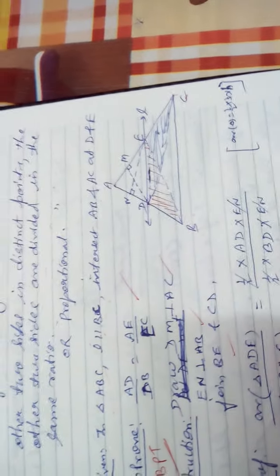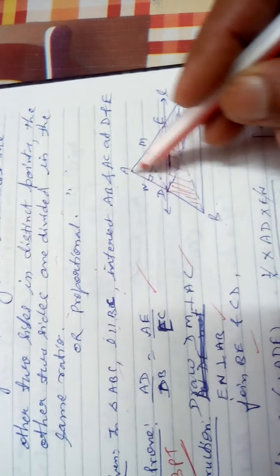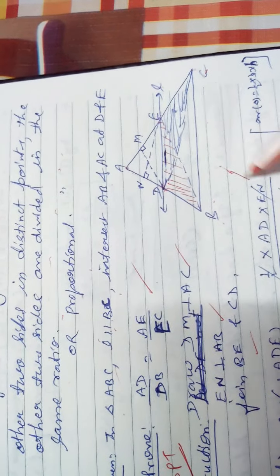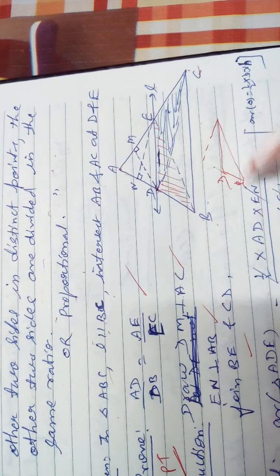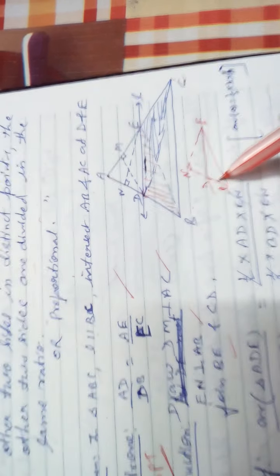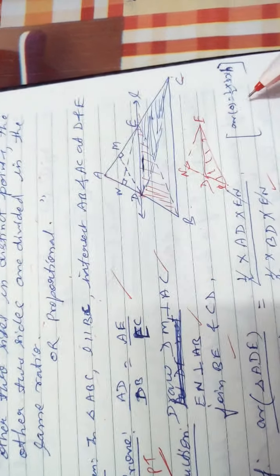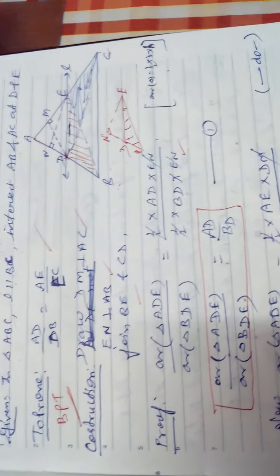In the proof we apply the half-times-base-times-height formula. The area of triangle ADE and area of triangle BDE share the same altitude EN from E. One has base AD and the other has base BD. So area of ADE upon area of BDE equals AD upon BD after the half and EN cancel.